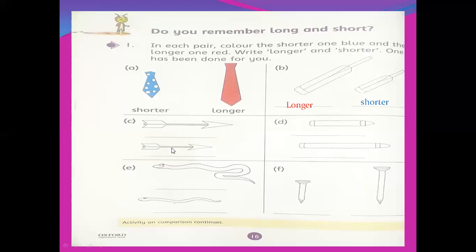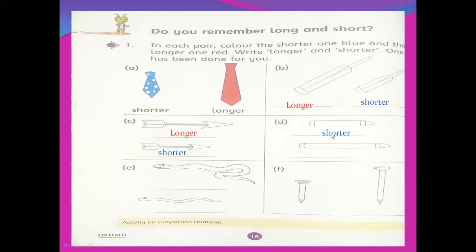Part C — this is the longer one. Which color will you use here? Red. And here you write 'shorter' and color blue. Part D — which one is longer? This one is longer, this one is shorter. Write 'shorter' with blue color — color this pencil blue. And this is the longer — write 'longer' with pencil and then color it red.